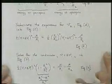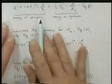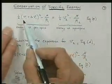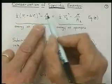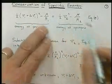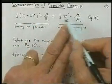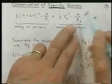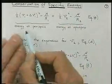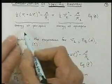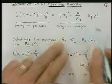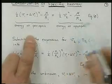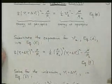So taking the specific energy to be this equation, one-half V squared plus the potential energy minus mu over R1 is one-half V squared at the other point plus the potential energy of minus mu over R2. So we have the energy at periapsis, the specific energy, and the specific energy at apoapsis. These must be equal. So I use that equality to solve our problem.